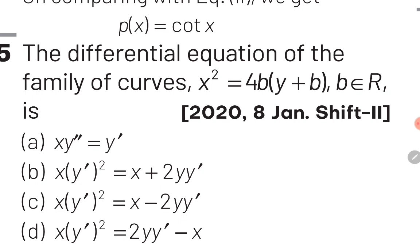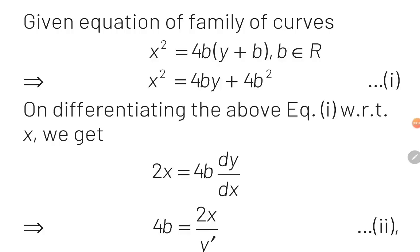Once we obtain the value of b, we will back substitute this into the main equation and from this we will get the final answer. The given equation is x² = 4b(y + b).